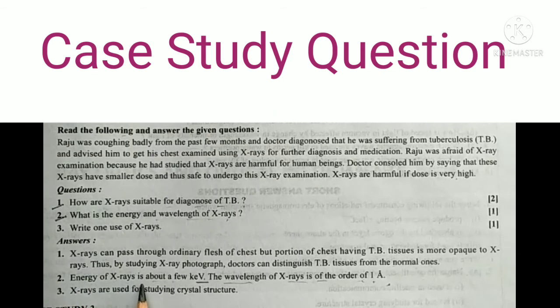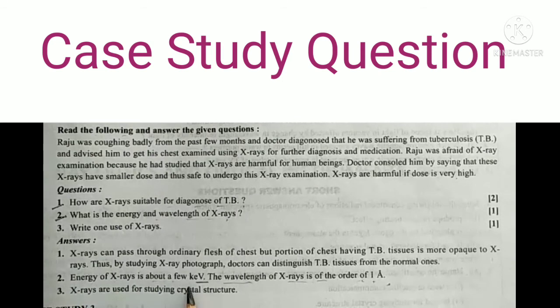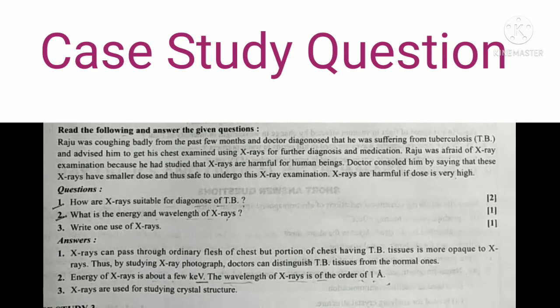Answer: Energy of x-ray is about a few kilo electron volts. The wavelength of x-rays is of the order of one angstrom.